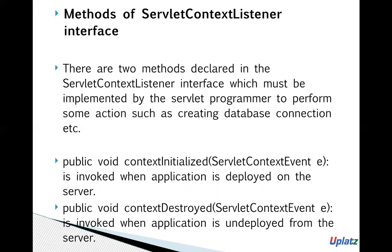So we understood what a servlet listener is and what an event is. An event is something which happens once there is a change in the state of an object, and a listener is something which gets notified once an event occurs. We discussed the servlet context event and its listener, the ServletContextListener, which is an interface. If you have to do some task at the time of project deployment, write that code inside this listener — it has two methods, contextInitialized and contextDestroyed, which the implementation class must override. In the next video, we will do a program using the servlet context event and implement the ServletContextListener interface.